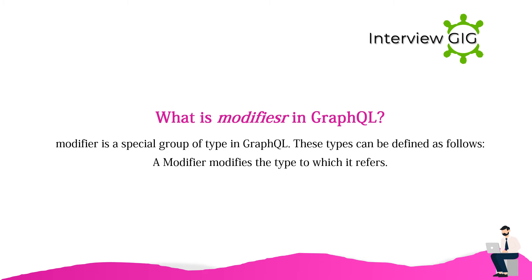What is a modifier in GraphQL? A modifier is a special group of types in GraphQL. A modifier modifies the type to which it refers.